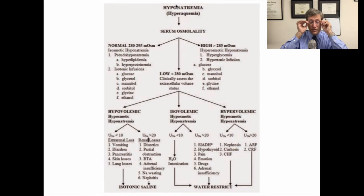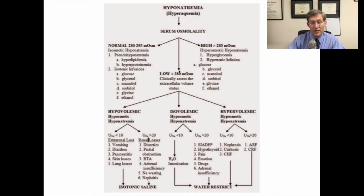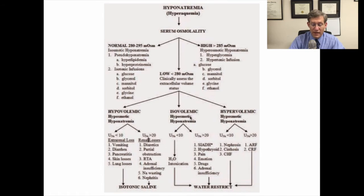We wanted to put a couple more slides just to reinforce this structured approach to the patient with hyponatremia. Again, start out by checking the serum osmolality, determining if it's low, normal, or high, and you can see the associated differential diagnoses. Most of the patients you'll be treating will have true hyposmolar or hypotonic hyponatremia. Then make a clinical determination as to whether they're hypovolemic, isovolemic, or hypervolemic, and check urine electrolytes to determine if it's extra-renal or renal losses.